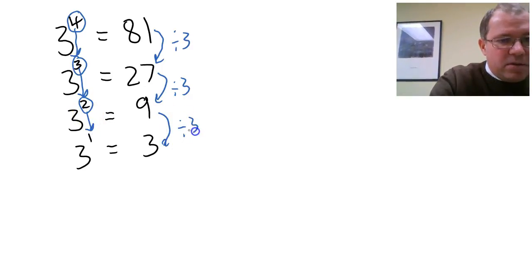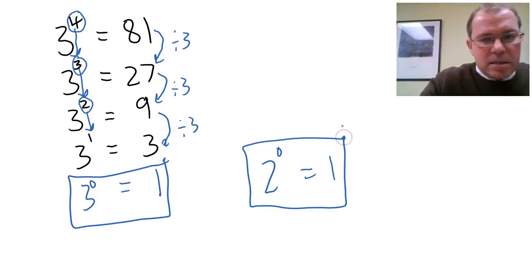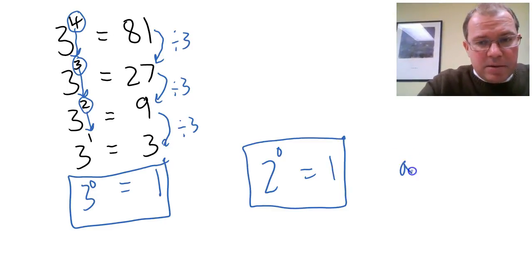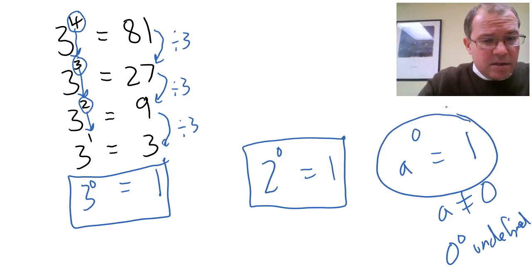Notice again that 3 to the power of 0—something to the power of 0—is 3 divided by 3, which is 1. So remember that 2 to the power of 0 is also 1. In fact, you'll find that anything to the power of 0 is always 1, as long as we don't have 0, because 0 to the power of 0 is actually undefined. But anything to the power of 0 is 1, as long as a is not equal to 0.